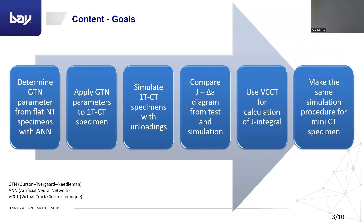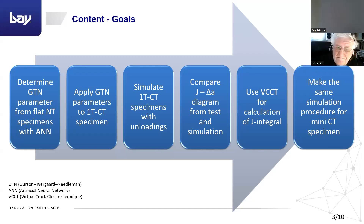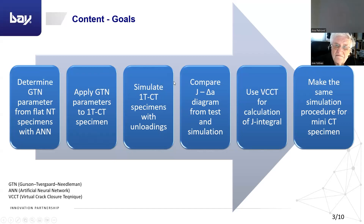First of all, we used finite element simulations to determine the fracture toughness. Therefore, it was essential to determine the GTN parameters. In the first step, we used small-sized flat specimens with an artificial neural network, and thereafter in the second step, we applied them for 1T-CT specimens, which was validated. And because we wanted to generate the J-integral, we carried out measurements and compared the results from 1T-CT with the measurements.